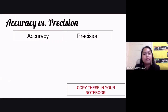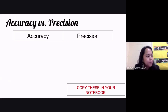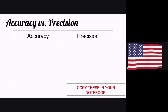Now whenever you have the term measurement, you also have accuracy and precision. Can anyone tell us what the difference is between accuracy and precision, if you can still remember? Accuracy is like how close the result is to the right thing, and then precision is how close the answers are together, rather than to the goal.